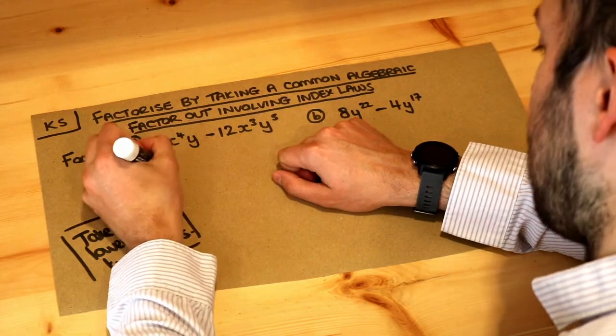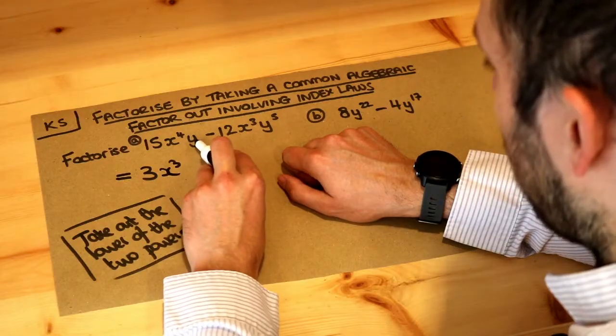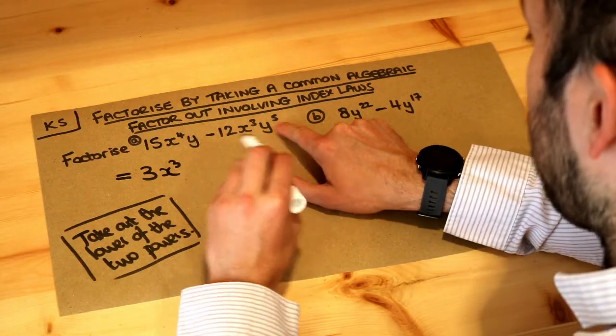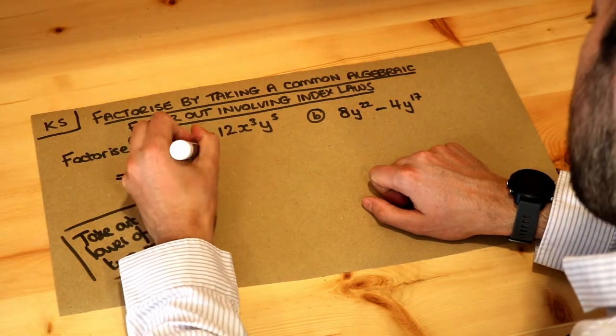So 3 is lower than 4, so we take out x to the 3. And then we've got y to the 1 - essentially y on its own is just y to the 1 - and y to the 5. We take out the lower of the two powers, y to the 1, so just y, and then we do a bracket.